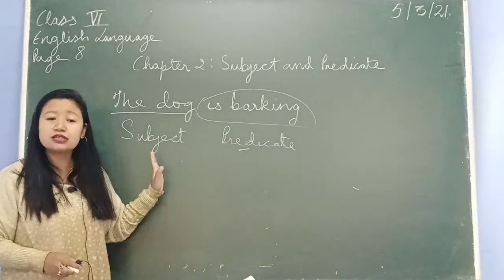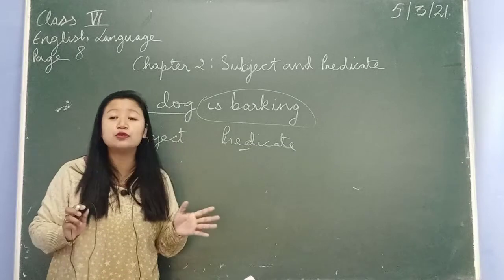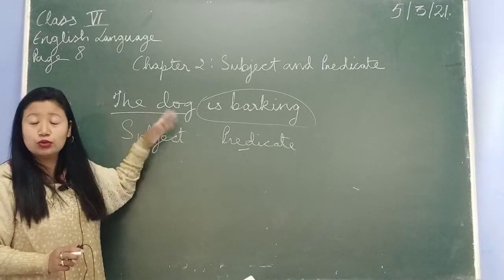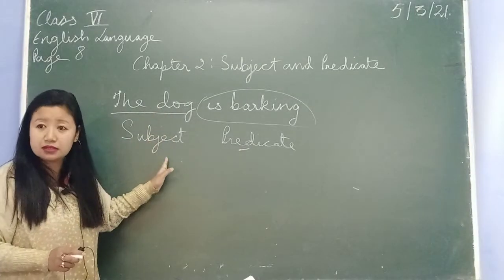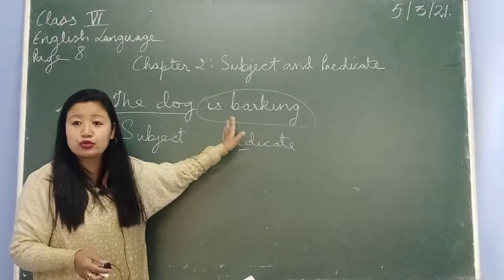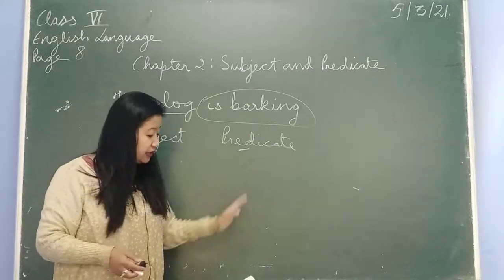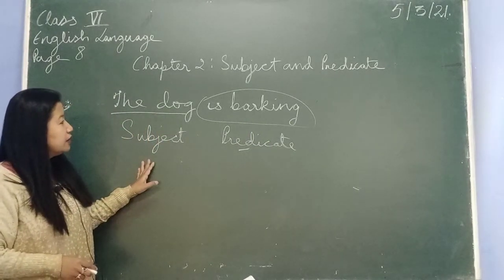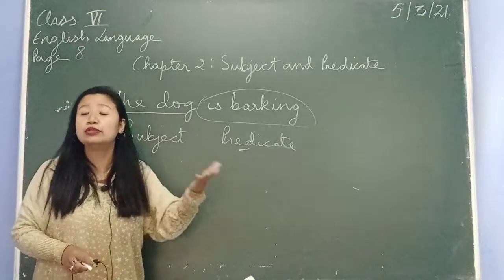Just understand this: we know the definition of a sentence — a group of words which makes sense. For the subject, it tells us who or what the sentence is about. The dog is the subject. What is the dog doing? The action the dog is doing — barking — so this becomes the predicate. You can have one word as a subject or you can have more than one word.